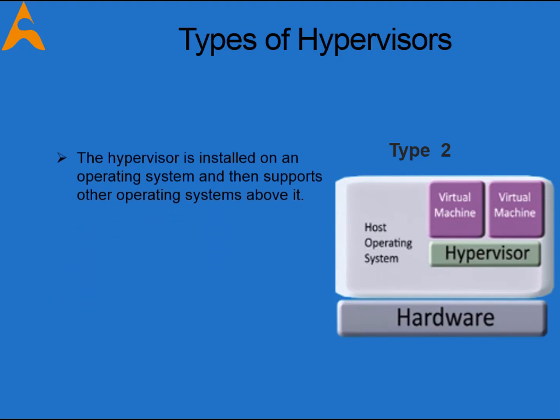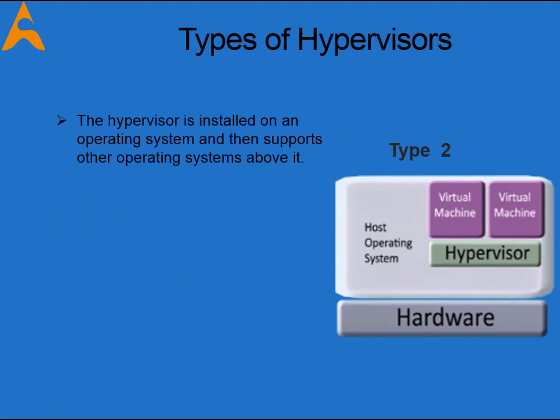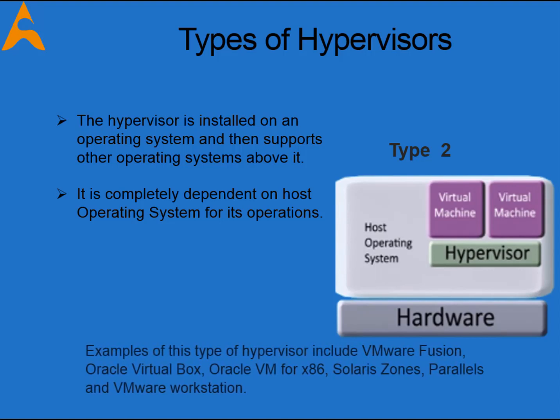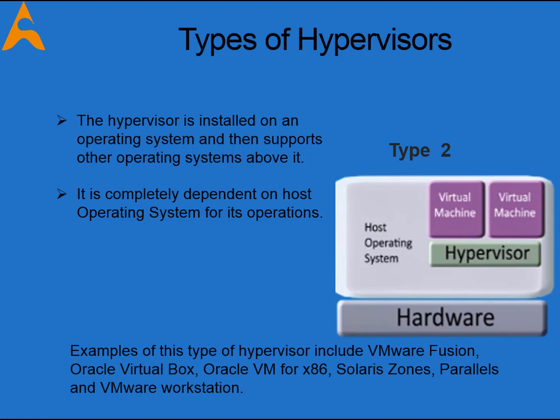Type 2 hypervisors run as an application on an existing operating system, also known as the host operating system. Also called hosted hypervisors, the hypervisor is installed on an operating system and then supports other operating systems above it. Here we don't need any management software in order to configure and run instances of the operating system on your computer. The Type 2 hypervisor opens up in a window just like any other application.